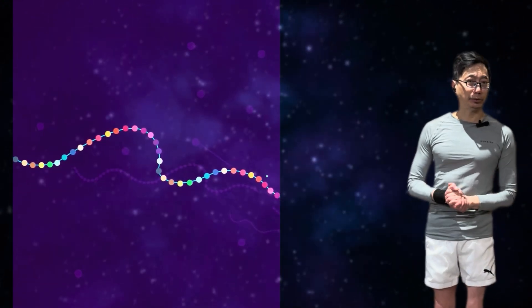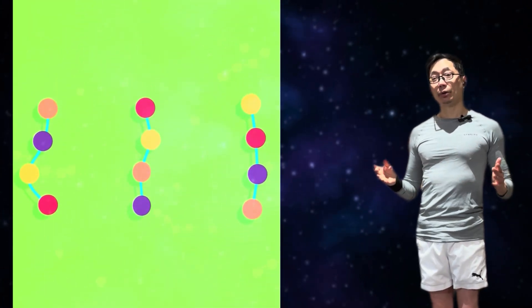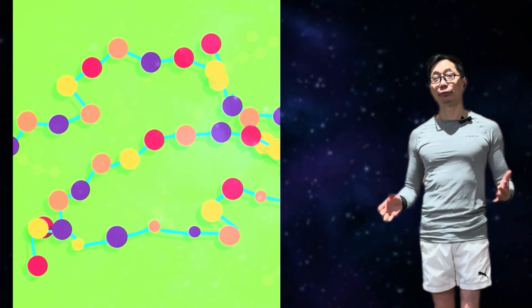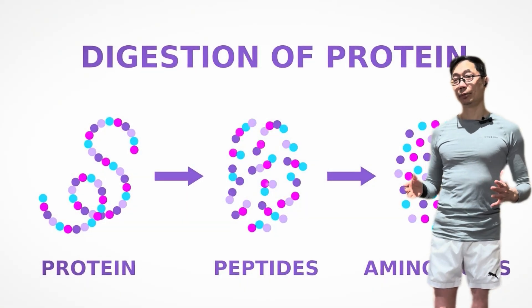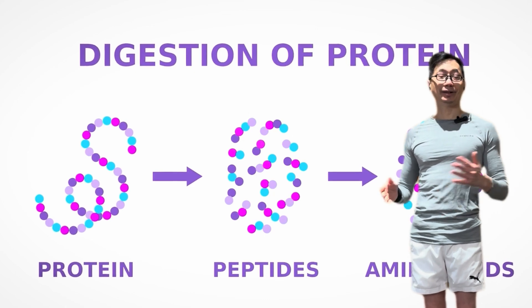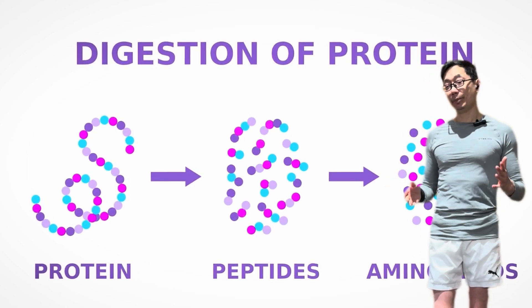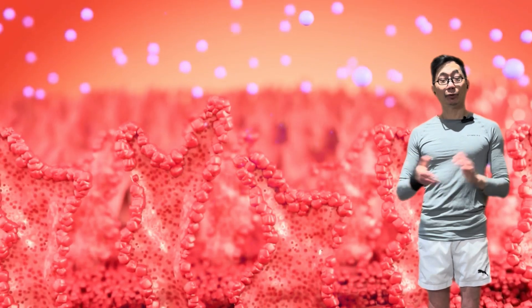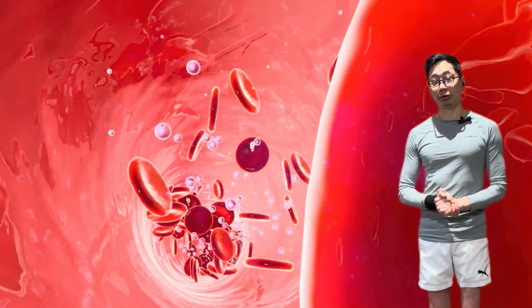But why would I take the time to explain this? Well, based on what we have talked about so far, you may have already got the idea that you cannot absorb a full protein or even a polypeptide. It first must be broken down into smaller peptides or amino acids before it can even come close to getting absorbed through the small intestine, and eventually into the bloodstream.